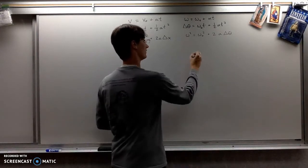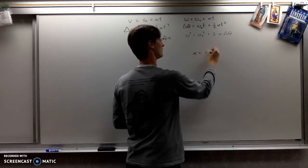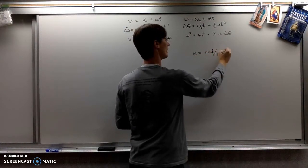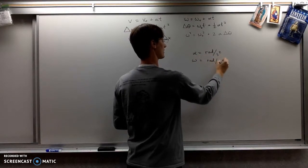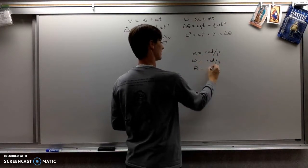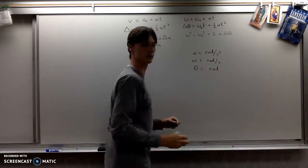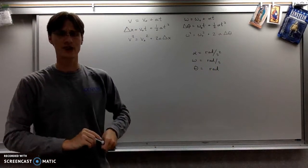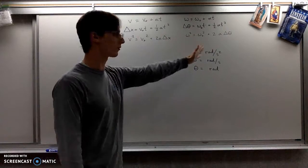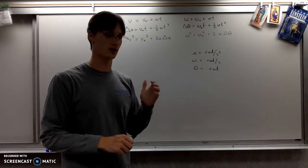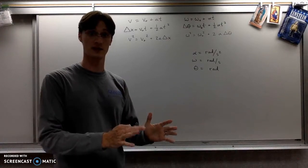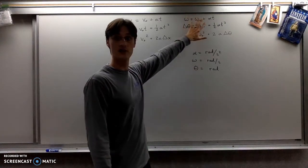So, units - alpha is measured in radians per second squared. Omega is radians per second, and theta is just measured in radians. So, as far as that goes, they work exactly the same way, as long as you know that you're solving for only angular quantities, then these would be the equations to use.